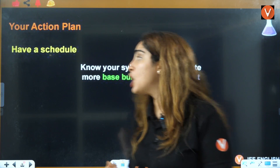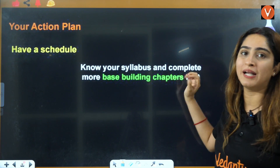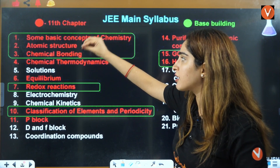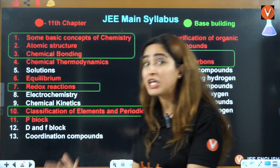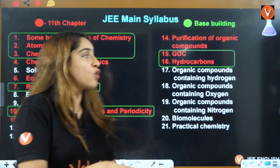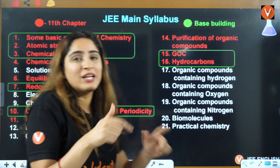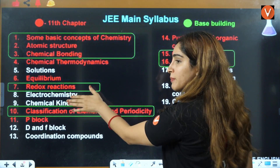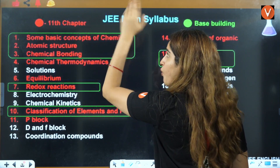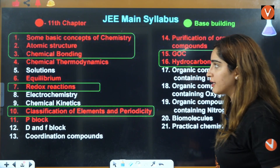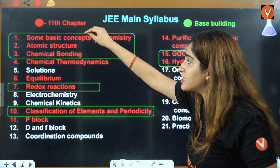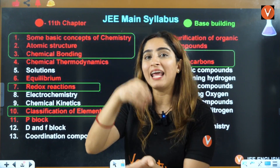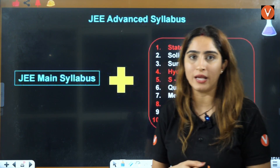Next, you need a proper schedule. First, identify your base-building chapters. For chemistry, these are: some basic concepts, atomic structure, chemical bonding, redox, periodicity, and GOC. Focus on these chapters first. Then align your backlog coverage with what's currently going on in your class — if electrochemistry is going on in class, focus on that; if solutions is going on, focus there; sync your organic and inorganic backlogs similarly.